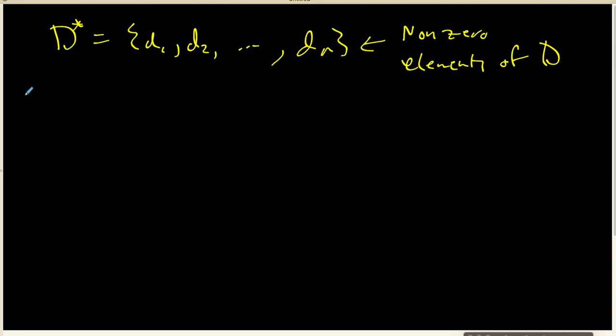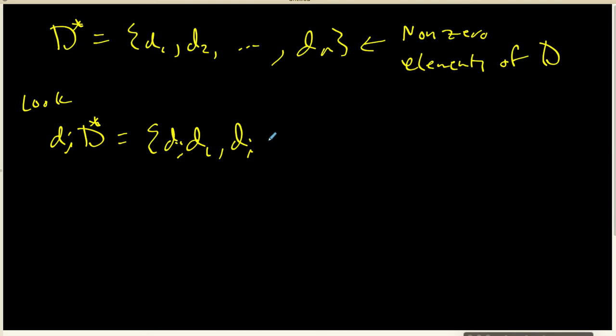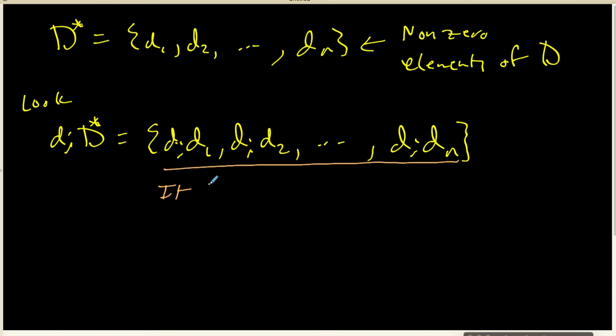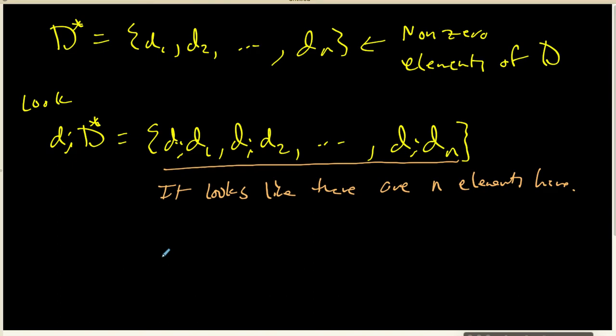Now what I'm going to do is look at the set D_i times D*. D_i times D* will be D_i times D_1, D_i times D_2, and so on all the way up to D_i times D_n. It looks like there are n elements in this list.